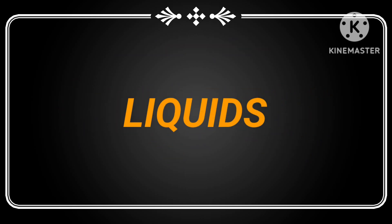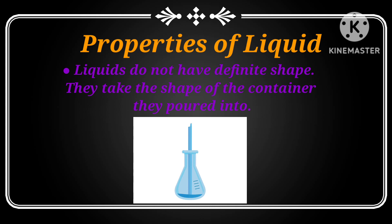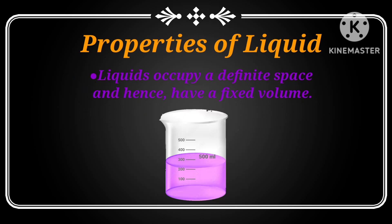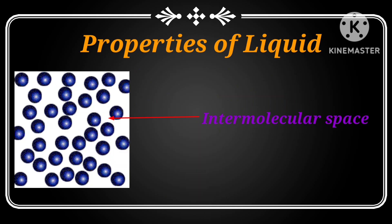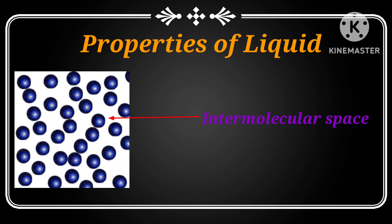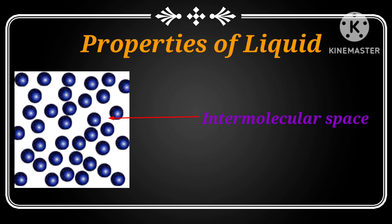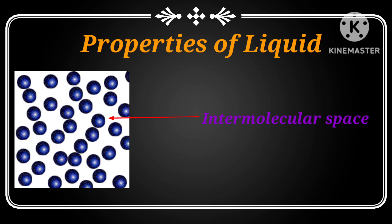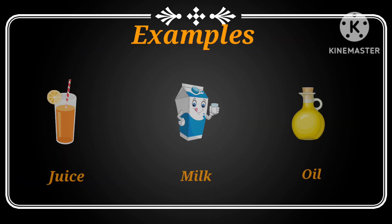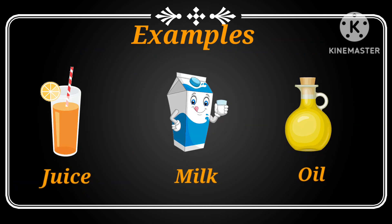Now let's see properties of liquid. Liquids do not have definite shape. They take the shape of the container they are poured into. Liquids occupy a definite space and hence have a fixed volume. Molecules in liquid are loosely packed and intermolecular space is more than in solids. This is what gives liquids the ability to flow. Juice, milk, oil are some of the examples of liquids.